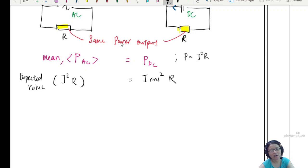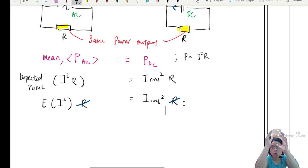And this one would just simply be IRMS squared times R. So the expected value of I squared R, the R is constant, right? Because if you want to find the expected value of I squared, this R I can take out because the R is a constant. Because of this, I can cancel off. So we arrive to the relationship that the expected value of I squared will be equal to the root mean square current squared.